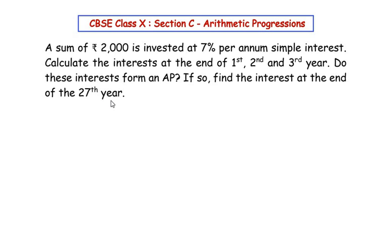Let us understand the question first. A sum of rupees 2000 — the principal amount — is being invested in a bank at an interest rate of 7% per annum, that is yearly simple interest. We have to calculate the interests at the end of the first, second, and third year, then check whether they form an AP, and if so, find the interest at the end of the 27th year.